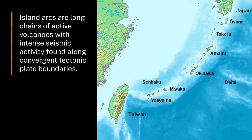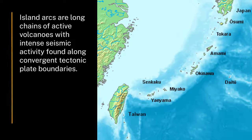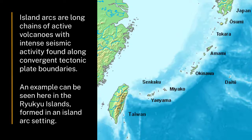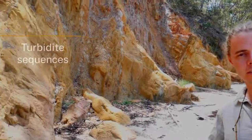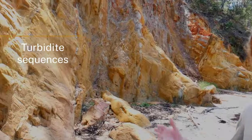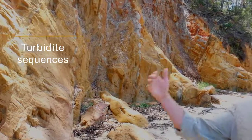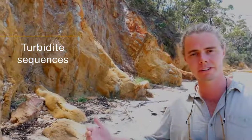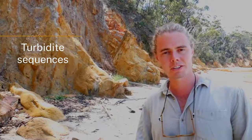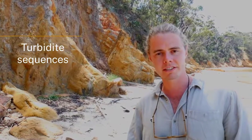So if we take the tectonic setting I'm standing in — the rocks here are predominantly made up of sandstones and siltstones in what we call turbidite sequences. Further inland we have granites and other intrusive igneous rocks, as well as some extrusive volcanics.